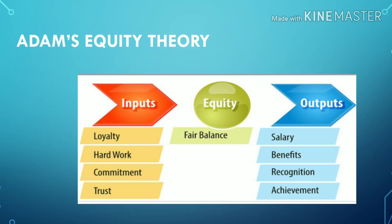Adam's Equity Theory: people are motivated if they are treated equally and receive what they consider fair for their efforts and costs. This is based on social exchange theory. At the workplace, workers put inputs into the job — for example, a teacher has knowledge and receives salary and recognition. Inputs include experience, knowledge, skill, and efforts. Outputs include salary, rewards, and bonus. There should be a fair balance between inputs and outputs.